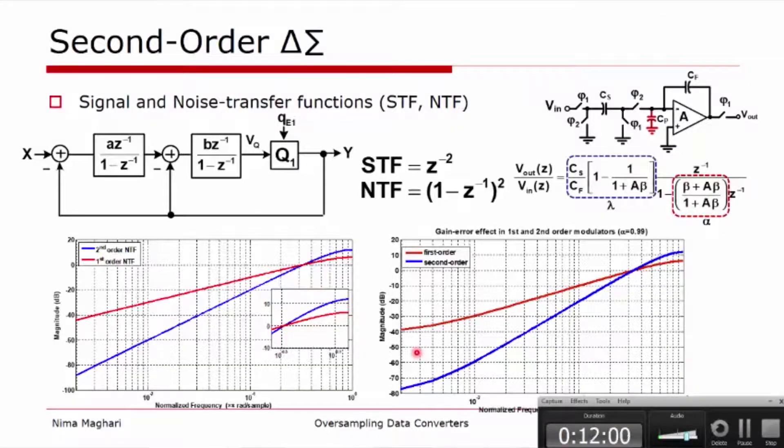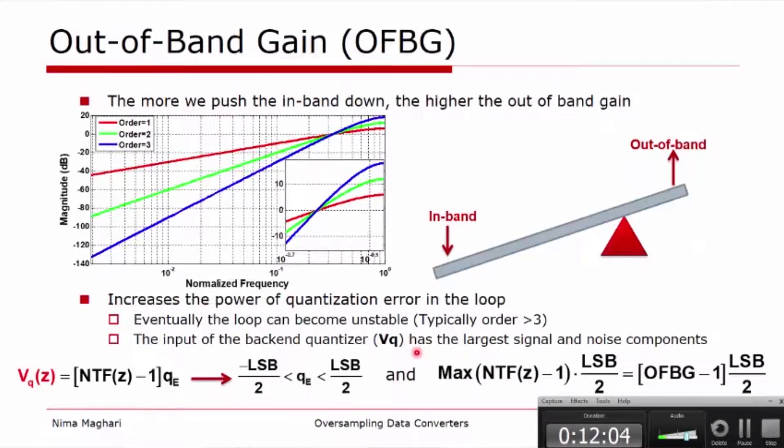Therefore the limited op-amp gain will change the noise transfer function rather than causing quantization noise leakage such as we had in multi-step or pipeline ADCs. Therefore these structures are less sensitive to a lot of op-amp gain variations.